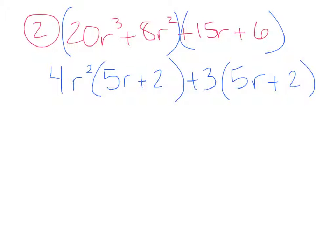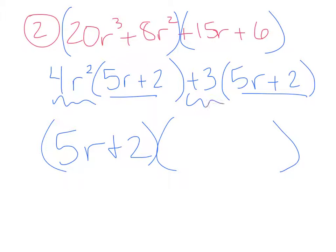Because 15 divided by 3 is 5, 6 divided by 3 is 2. And then your answer in two sets of parentheses. You have your 5r + 2, because if you look, they did match. Your other parentheses comes from what you took out. So 4r² + 3. That's grouping.